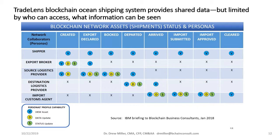Because of this separation and control of data access, competitors to Maersk can use this blockchain — and they are — without worrying that Maersk will see their data, because they're in separate channels. You can have separate smart contracts, called chain code in Hyperledger Fabric, in different channels, so you can charge different pricing for different parties while keeping that information confidential. As of 2019, TradeLens has several of the world's largest ocean shipping companies using the system, including Maersk competitors.